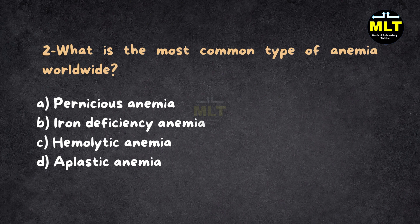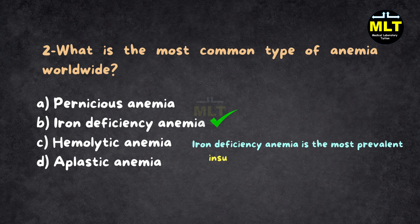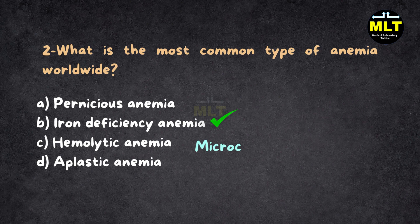Correct answer: B. Iron deficiency anemia. Explanation: Iron deficiency anemia is the most prevalent type due to insufficient dietary iron, blood loss, or malabsorption. It is characterized by microcytic hypochromic RBCs, which means smaller red cells with less hemoglobin.